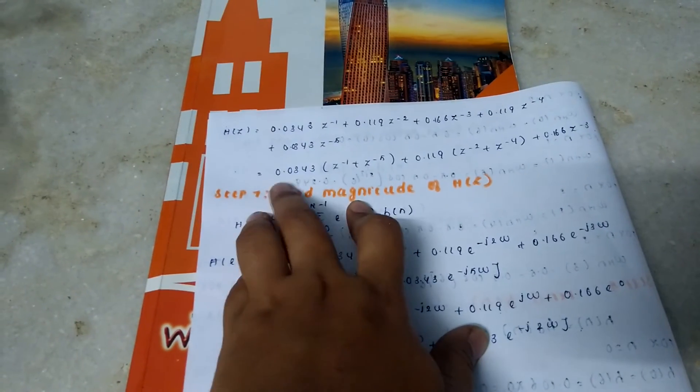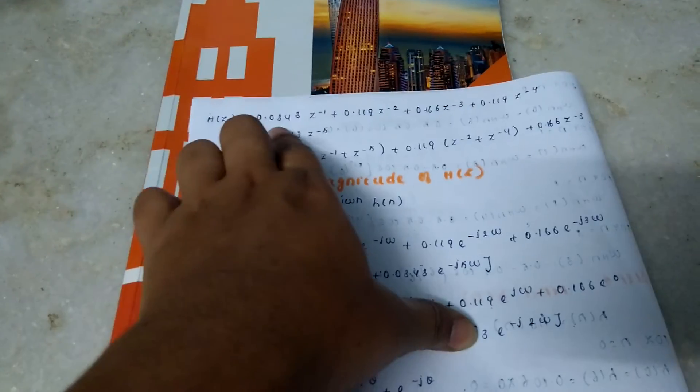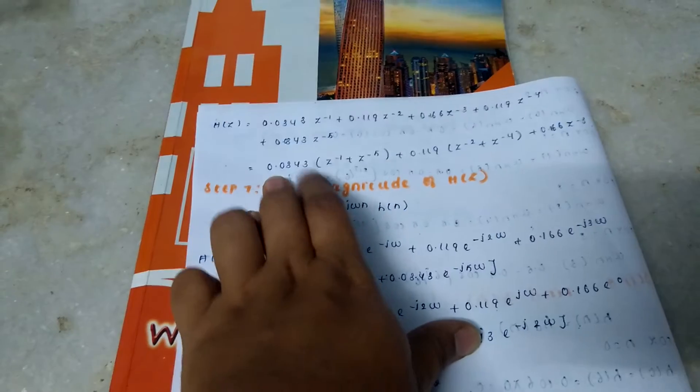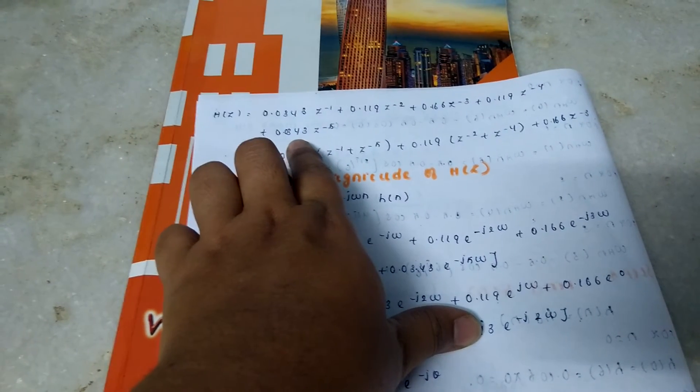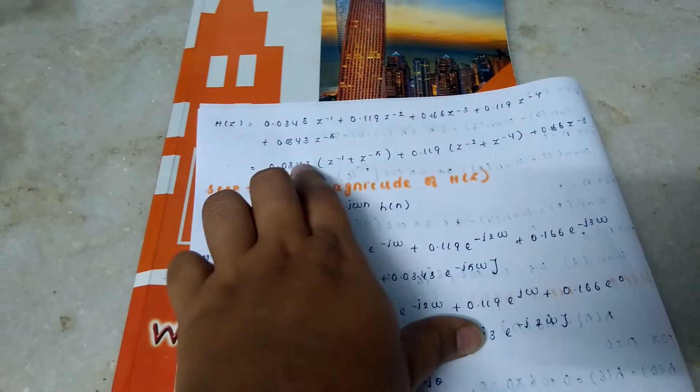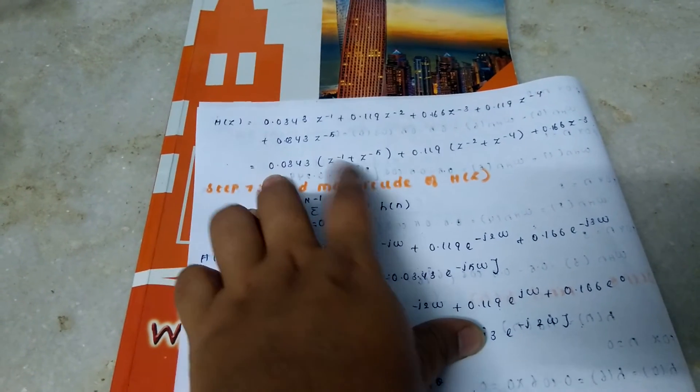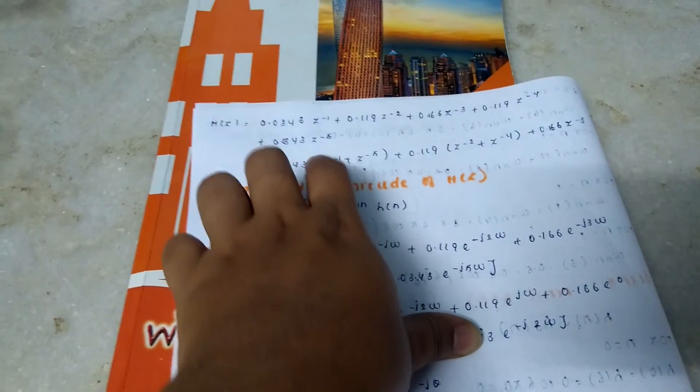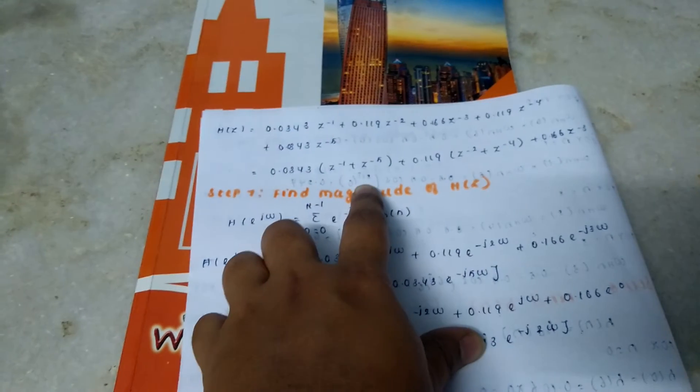Then take the common term outside. That is, 0.034 is common, and here also 0.034 is common. Take these two as a common term and your z^(-1) + z^(-2) term inside.